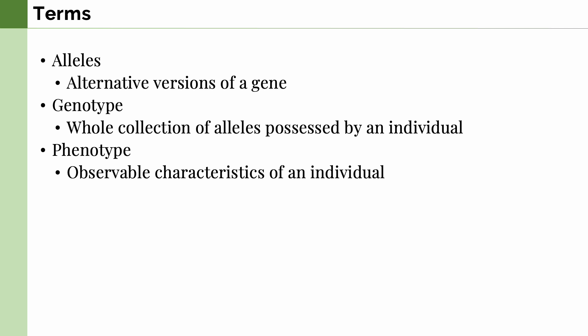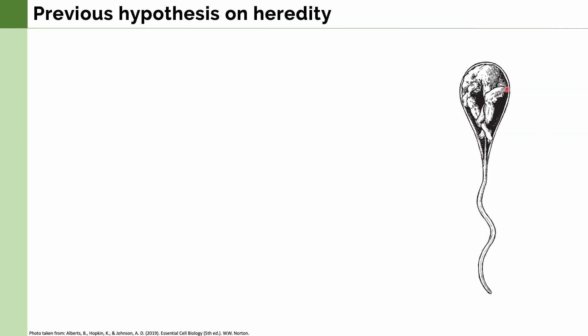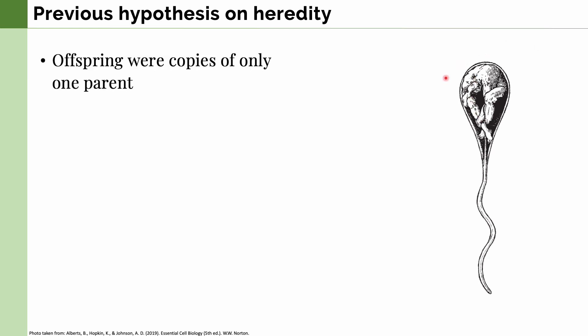Now that we know this, let's move on to heredity. In this figure, we can see a previously held belief about heredity — here we see a sperm cell with a small human inside. Scientists previously believed that offspring were only copies of one parent, usually the father, who gave their genetics to their offspring.